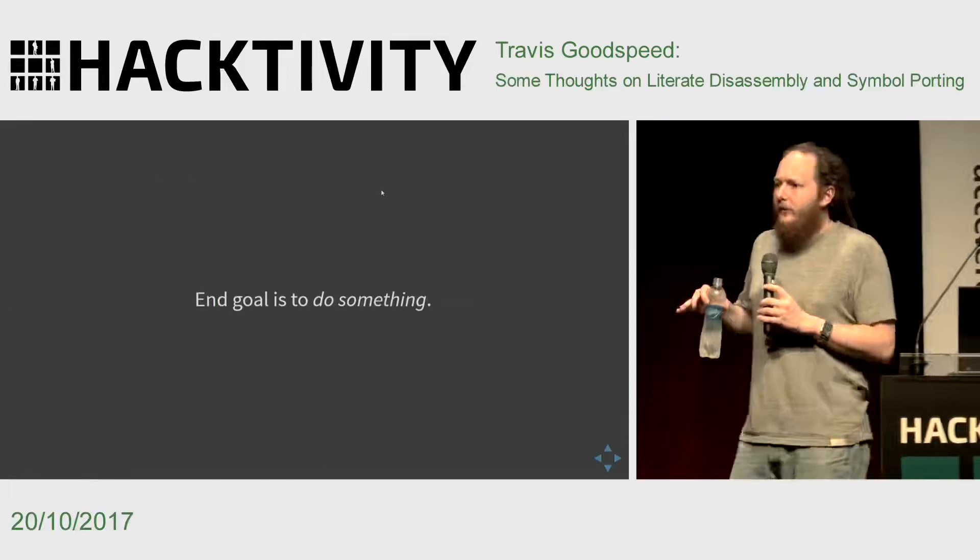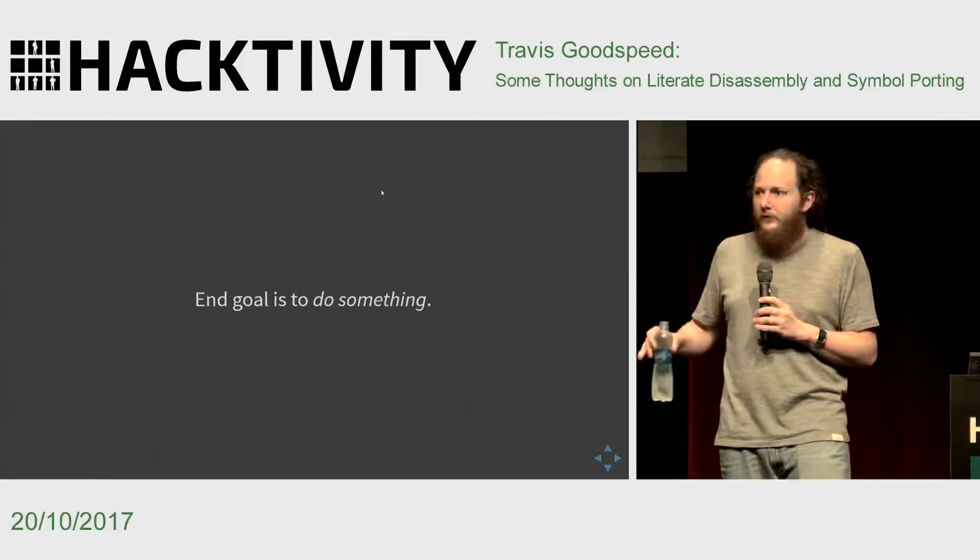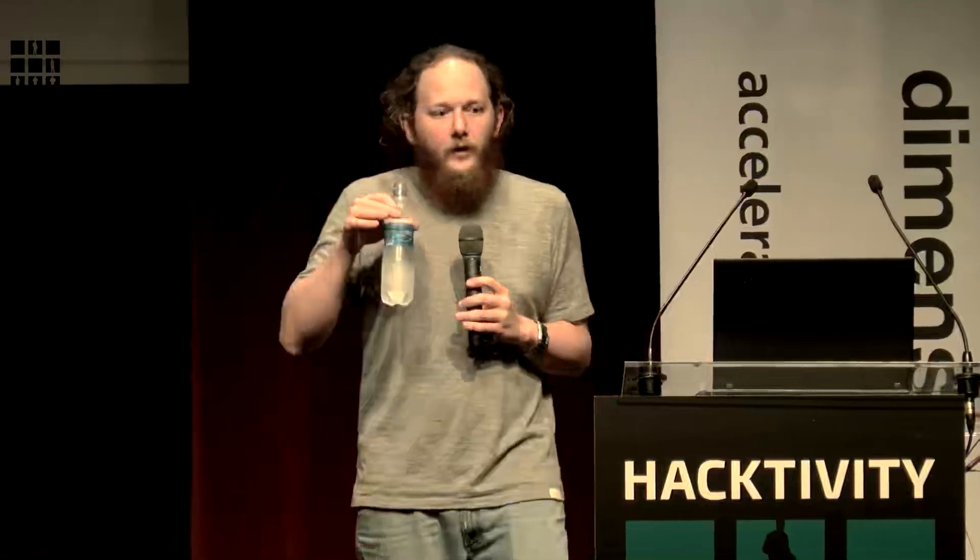Throughout all of this there's an end goal — to do something with the program. You don't reverse engineer programs because C compilers generate good literature. Instead you're trying to patch it, write an exploit for it, or reverse engineer something it interacts with. As Bob goes through it, he'll focus on the pieces of code he cares most about. For example, if he's trying to break the copy protection on a video game, he'll look for the code that validates the serial number — and that might be the only thing in megabytes of code that he actually cares about.